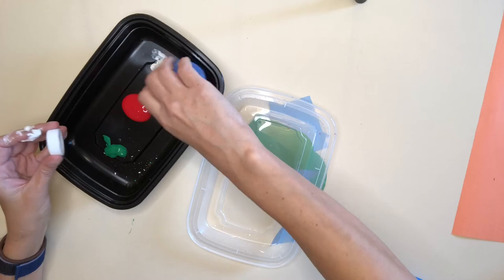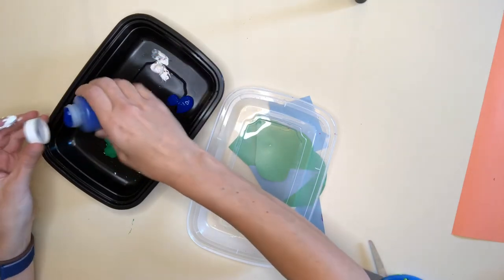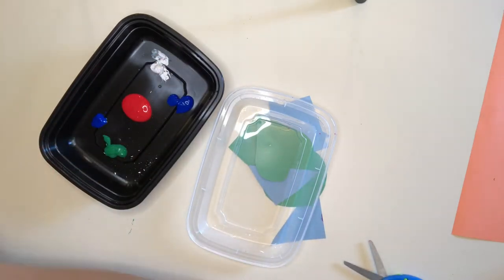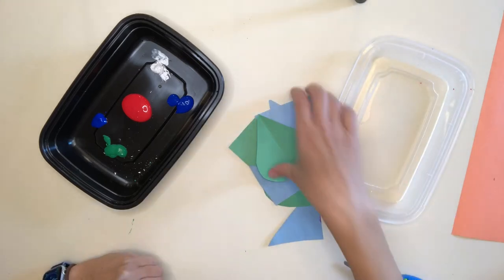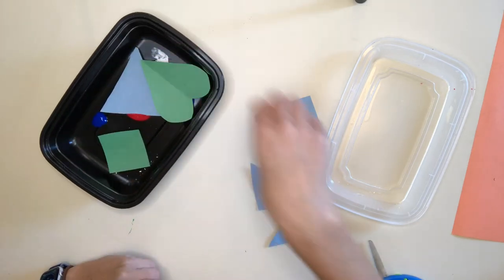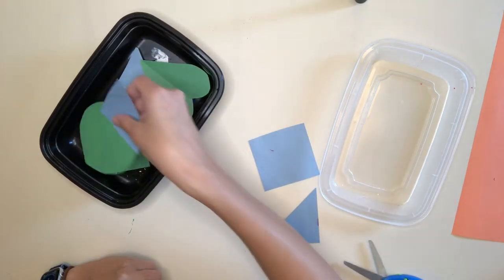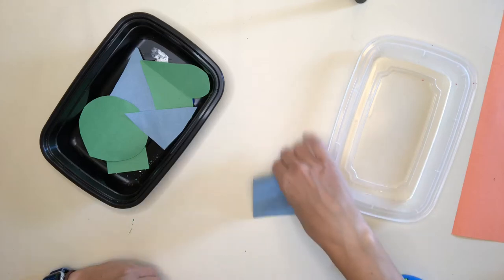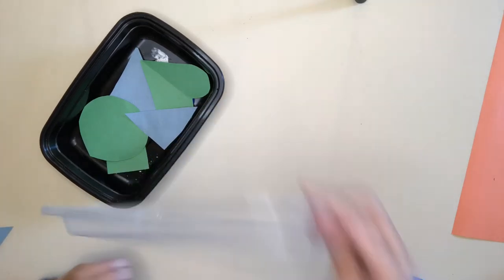So now that we have all of our paint in the container, it's time to put our pieces into the container. So I'm going to put a few in there, and you can do this multiple times depending on how many pieces of construction paper and shapes that you cut.